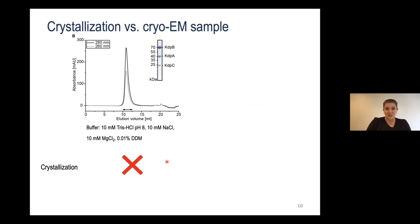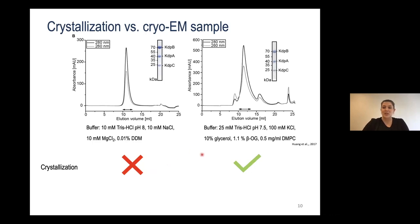A few years in, a crystal structure of KDPF-ABC was published by Bjorn and David, and I would have never gotten the trick that they used. This is the buffer composition they used for gel filtration - 1.1% of β-OG and then 0.5 mg per ml of DMPC. So actually, they're adding a lot of lipid to that.